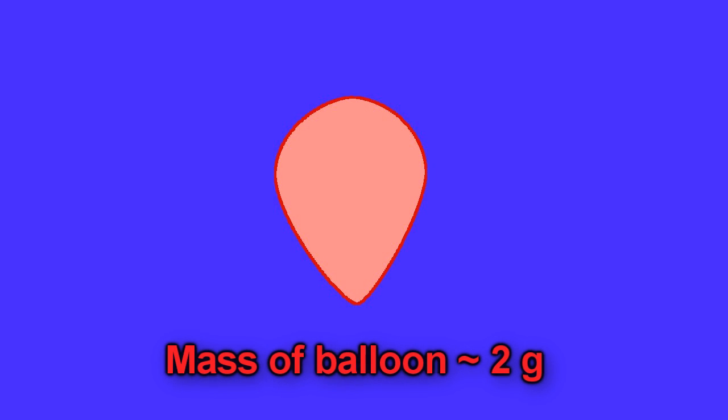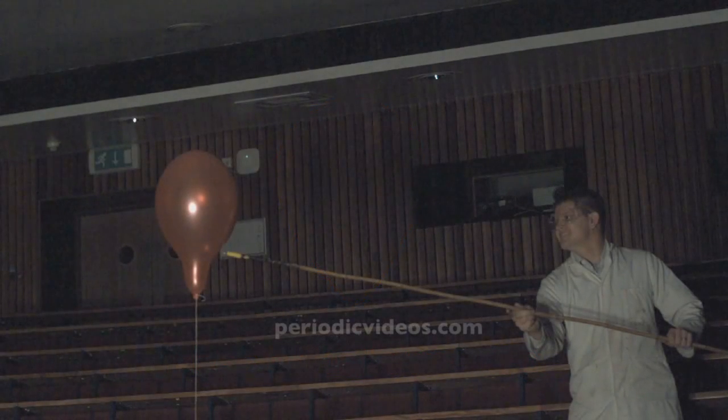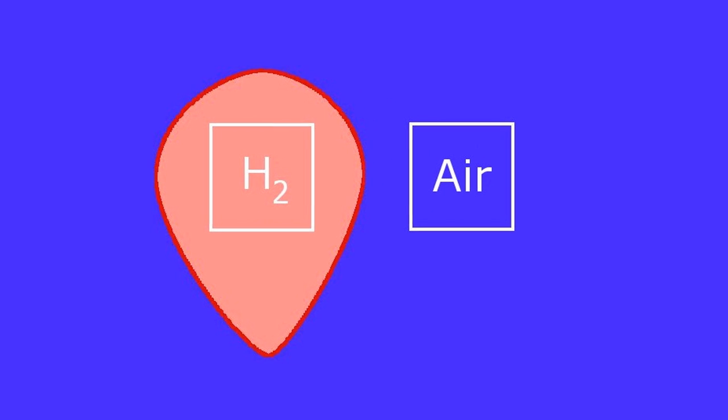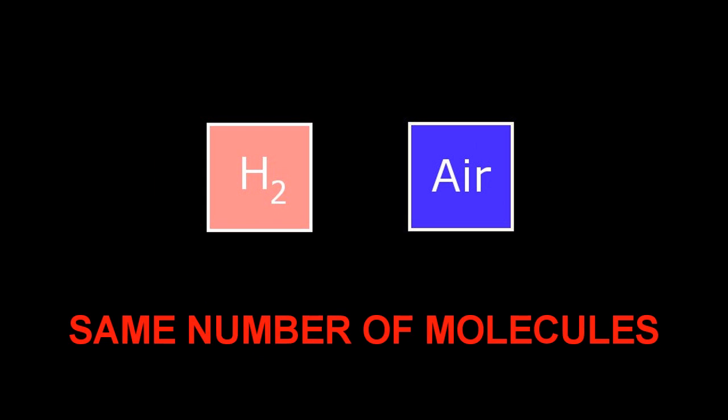Well consider this the balloon itself weighs about two grams. So let's just say for sake of argument that this balloon has about two liters of gas in it. It's actually quite a bit more but we'll say two liters for the moment. That's about a tenth of a mole for convenience. Now it turns out it's actually a really good approximation that all gases have about the same number of particles or molecules per unit volume. That is a liter of hydrogen contains the same number of molecules as a liter of air.